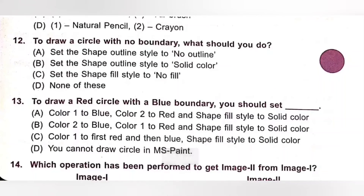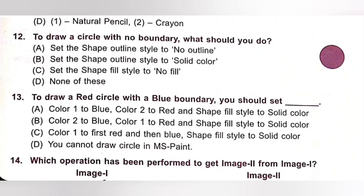Question 12: To draw a circle with no boundary, what should you do? A. Set the shape outline style to no outline. B. Set the shape outline style to solid color. C. Set the shape fill style to no fill. D. None of these. No boundary means you should set the shape outline style to no outline. Option A is the correct answer.